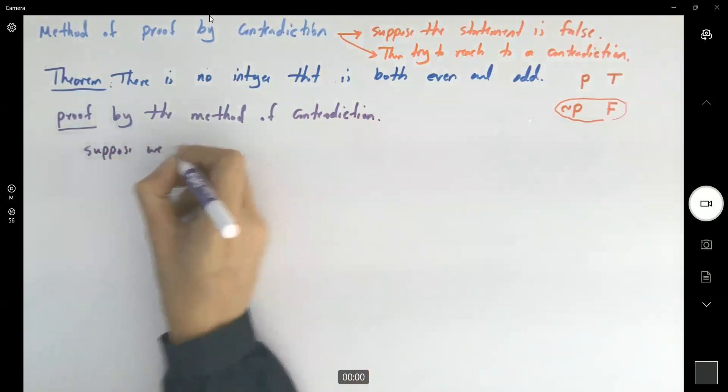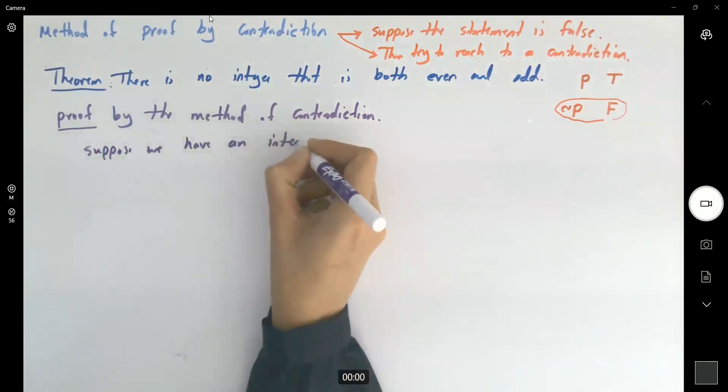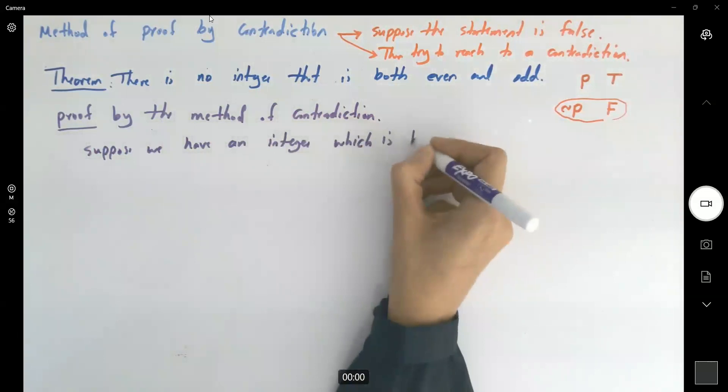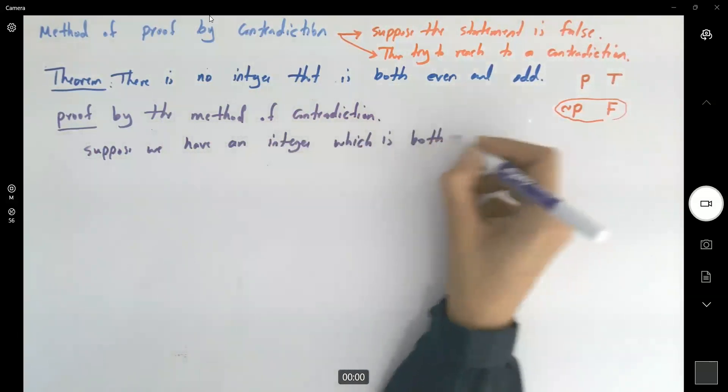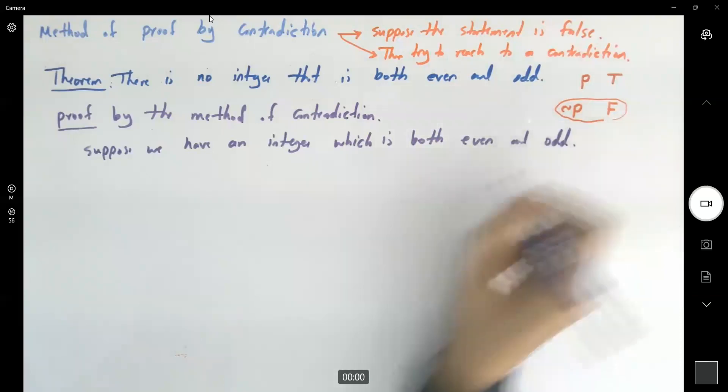Suppose this statement is false. Suppose we have an integer which is both even and odd.